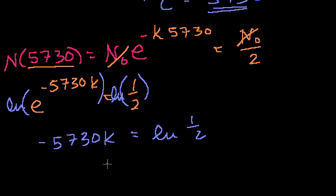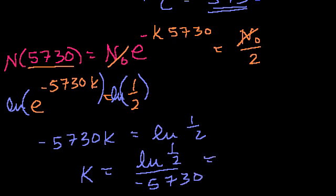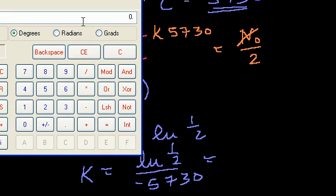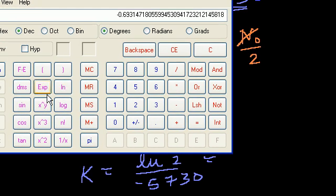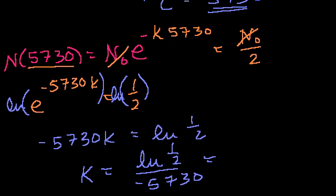And so to solve for k, we could just say k is equal to the natural log of 1 half over minus 5,730. So if you have 1 half, 0.5, take the natural log, and then you divide it by 5,730. It's a negative 5,730. You get 1.2 times 10 to the negative 4.